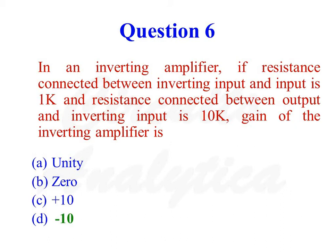For an inverting amplifier, gain is defined as the ratio of minus RF divided by R1. In this question, RF is equal to 10k and R1 is equal to 1k. Therefore, the correct answer is minus 10.